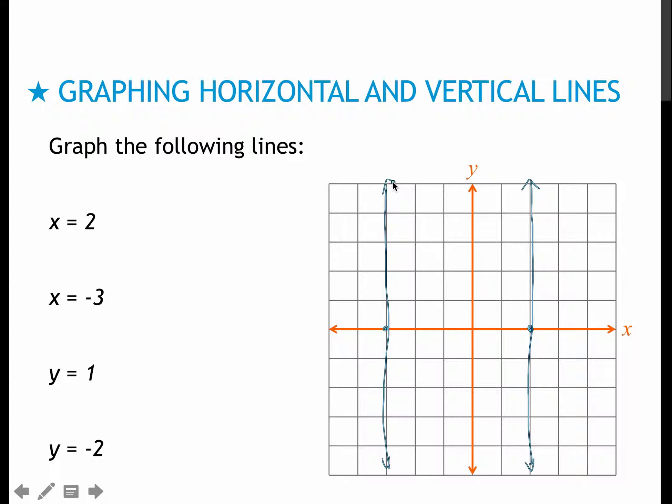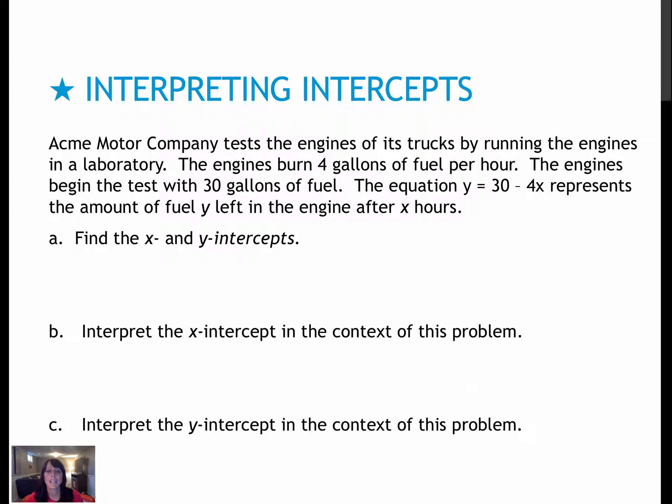x = -3 means I'm going to -3, and drawing a perpendicular line to the x-axis. y = 1 means I'm going on the y-axis to where y is 1, and then drawing that horizontal line, which is perpendicular to the y-axis. And then y = -2, again would be that horizontal line, perpendicular to the y-axis.